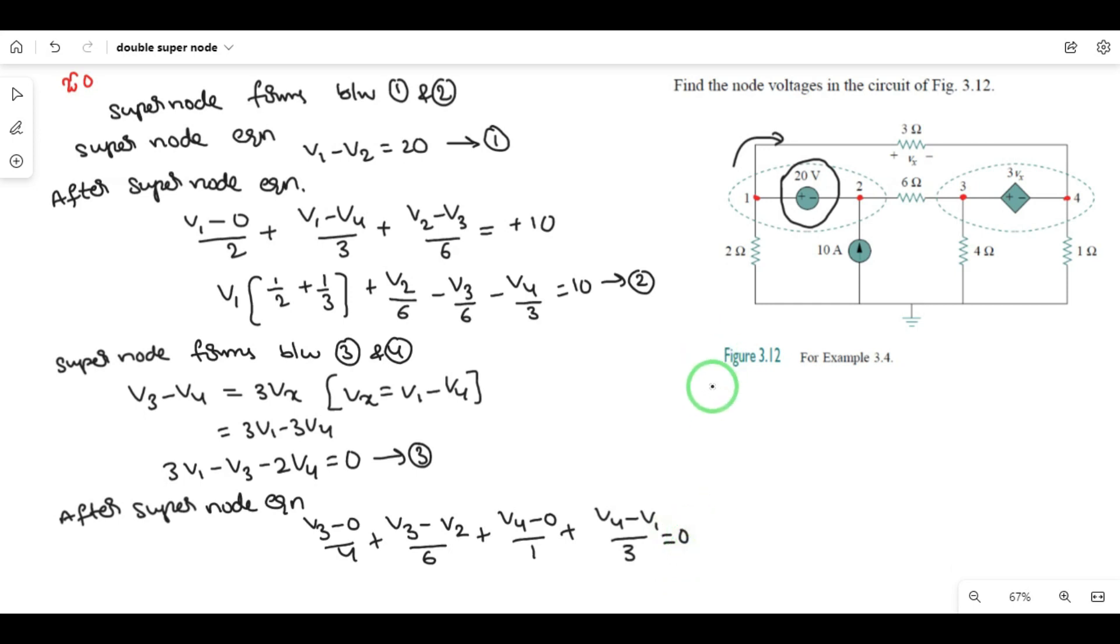Equation 4 in proper form: minus V1 by 3 minus V2 by 6 plus V3 times (1 by 4 plus 1 by 6) plus V4 times (1 plus 1 by 3) is equal to 0. This is equation number 4.